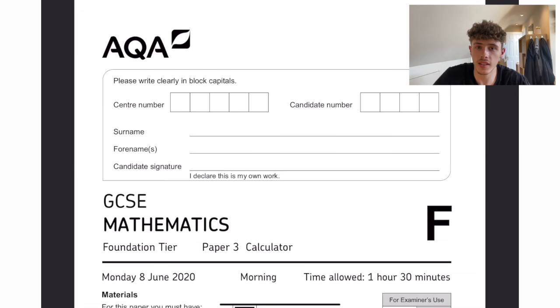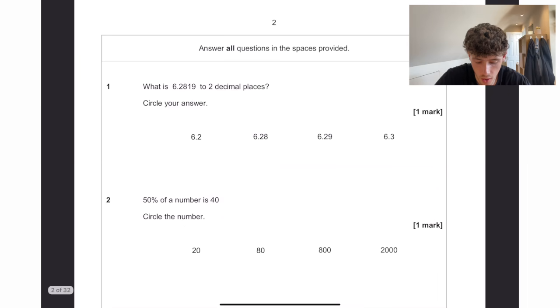Here is an AQA GCSE Maths Foundation Paper 3 ready for your next GCSE exam. So question 1, what is 6.219 to two decimal places?